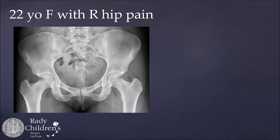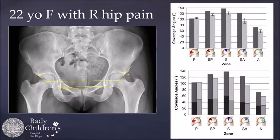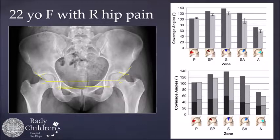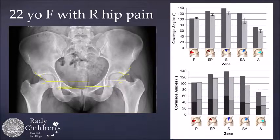Another application: a 22-year-old female with right hip pain. You can see the crossover sign — she is over-covered. The coverage analysis shows she's over-covered primarily superior, superior posterior, and superior anterior. This analysis also lets us break up the weight-bearing zone as well as the fossa to see if we could perform either a rim trim to correct the over-coverage laterally or if we should do a reverse PAO because she has decreased surface area. It helps in that decision-making process.